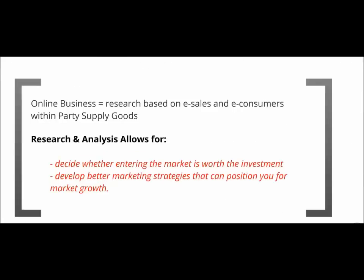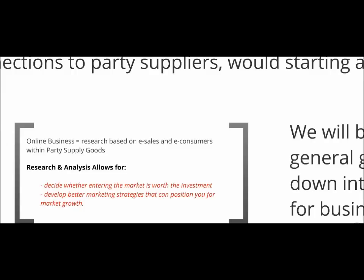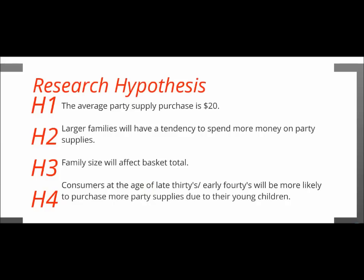Moving along and brushing over the research hypotheses: for hypothesis one, I overshot it by about $8 — the actual average was $12 and some change. For hypothesis two, it does show a tendency to spend more money with larger families. Family size does affect the basket total. For hypothesis four, consumers at the age of late thirties to early forties will be more likely to purchase more party supplies due to their young children — that does prove correct. For the majority, the hypotheses were correct.